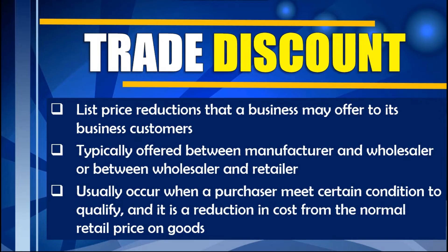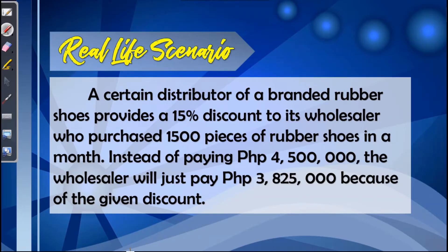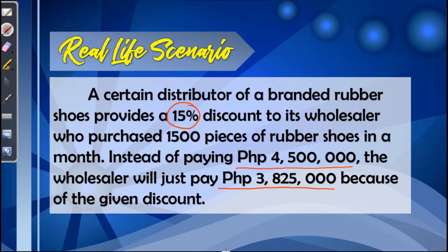Let us use this real-life scenario. A certain distributor of a branded rubber shoes provides a 15% discount to its wholesaler who purchased 1,500 pieces of rubber shoes in a month. Instead of paying 4,500,000, the wholesaler will just pay 3,825,000. In this scenario, the 15% is what we call the trade discount rate, the 4,500,000 is the list price, and the 3,825,000 is the net price.